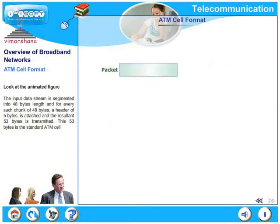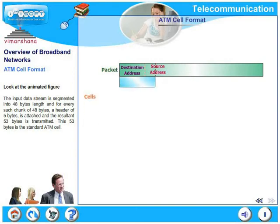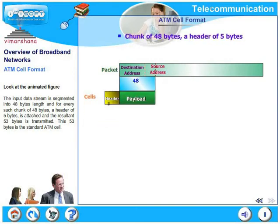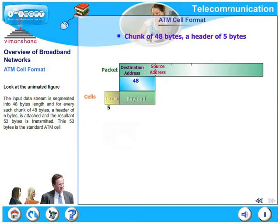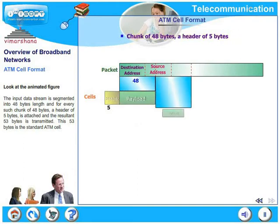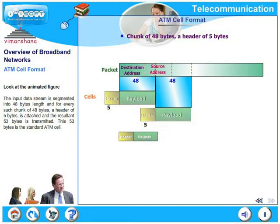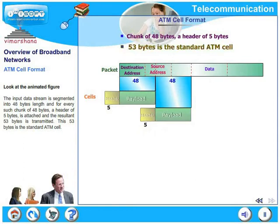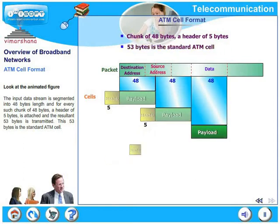Look at the animated figure. The input data stream is segmented into 48-byte lengths, and for each chunk of these 48 bytes, a header of 5 bytes is attached and the resultant 53 bytes is transmitted. This 53-byte unit is a standard ATM cell.